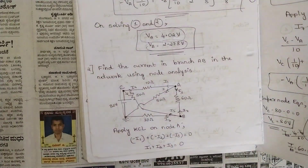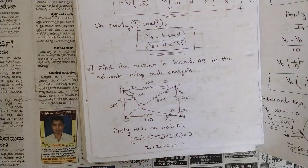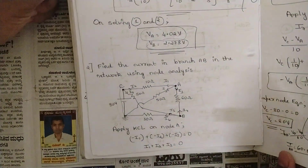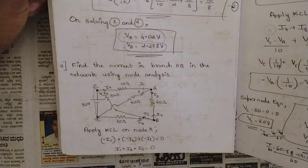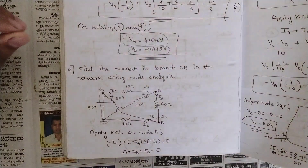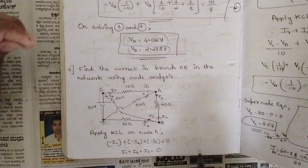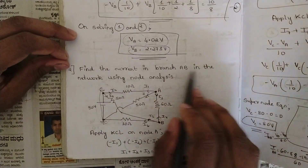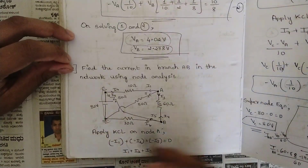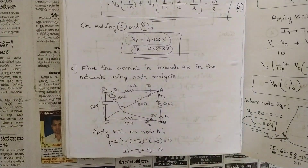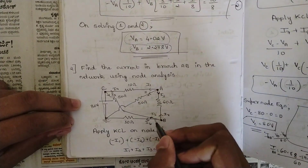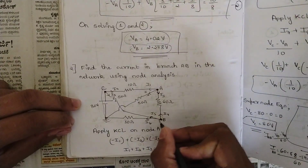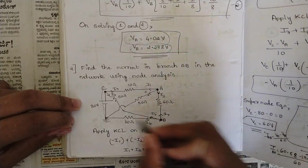Here we have one more problem: find the current in branch AB in the network shown using node analysis. In this circuit we have three nodes: node A, node B, and node C.